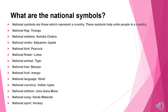National symbols are those which represent a country. These symbols help to unite people in a country. The national symbols of India are: our national flag is Tiranga, our national emblem is Ashoka Chakra, our national motto is Satyamev Jayate, our national bird is Peacock, national flower is Lotus, national animal is Tiger, national tree is Banyan, national fruit is Mango, national language is Hindi, national currency is Indian Rupee, national anthem is Jana Gana Mana, national song is Vande Mataram, and national sport is Hockey.